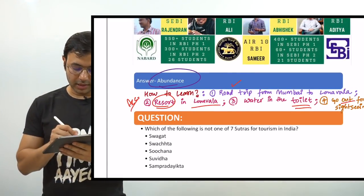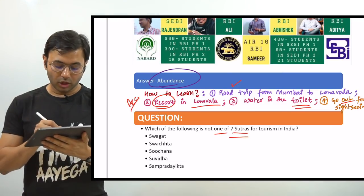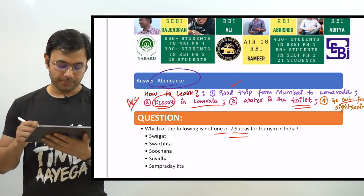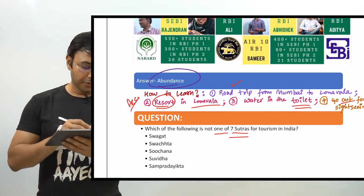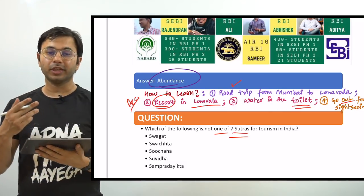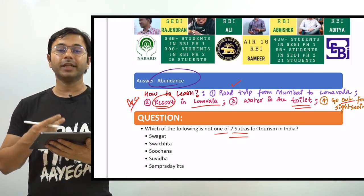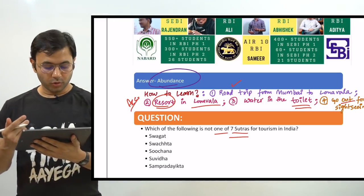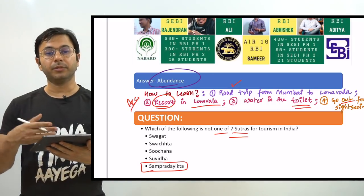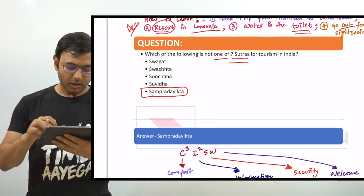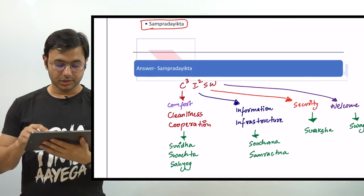The last and most important question for today: which of the following is not one of the seven Sutras for tourism in India? The options are: Swagat, Swachita, Suchana, Suvida, and Sampradaikta. If you don't know Hindi, it is difficult to answer. The answer is Sampradaikta, which means communalism — clearly not a tourism sutra.